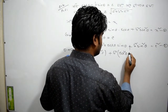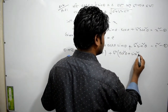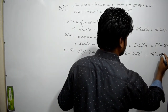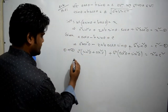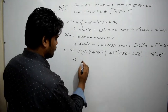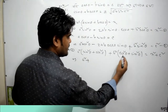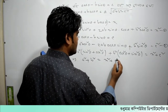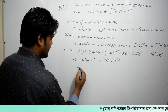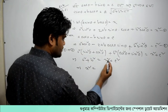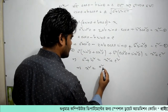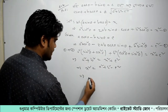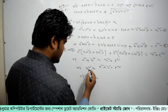sin²θ plus cos²θ equals 1, so we get x² plus c² equals a² + b². So once we get that, it equals 1 — so p² equals x² plus c². I should show that x² plus c² equals a² plus b² minus c²... then 1² plus b² minus c².